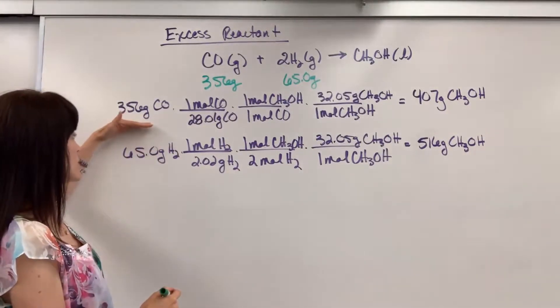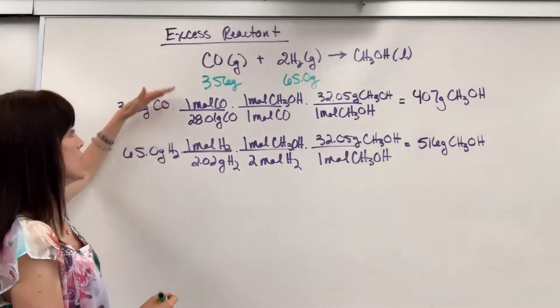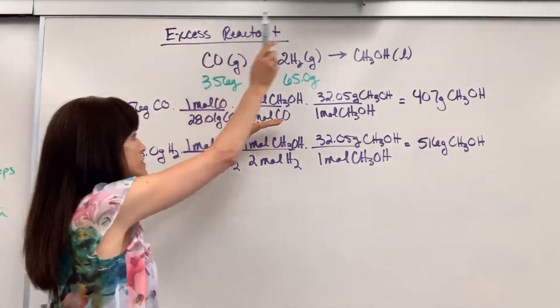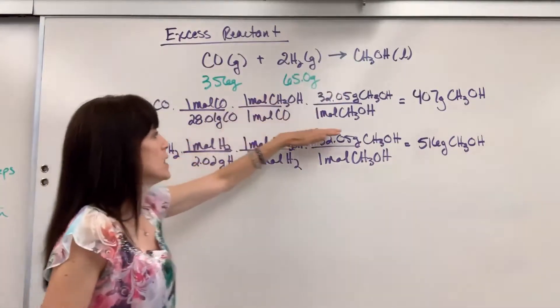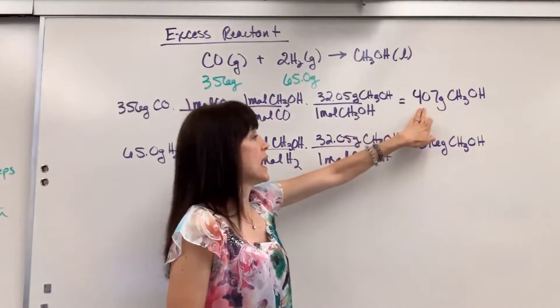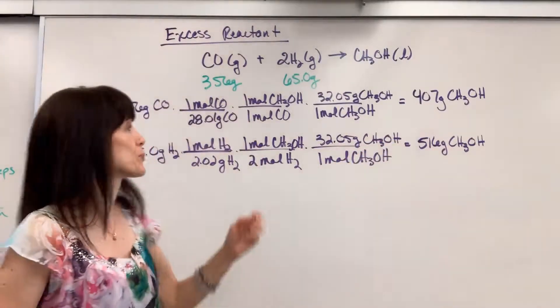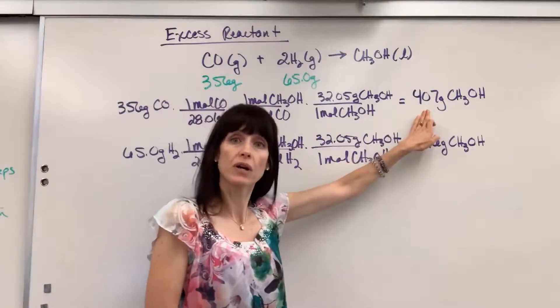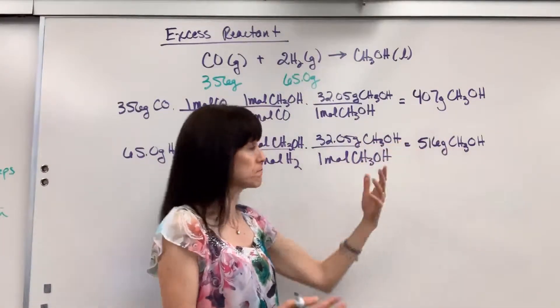We're going to go from the 356 grams of carbon monoxide, bring that to moles, walk the bridge, use the molar ratio. One mole of CO produces one mole of methanol. Bring the methanol back to grams using molar mass and that tells me if I use all 356 grams of carbon monoxide, it's going to produce 407 grams of methanol.